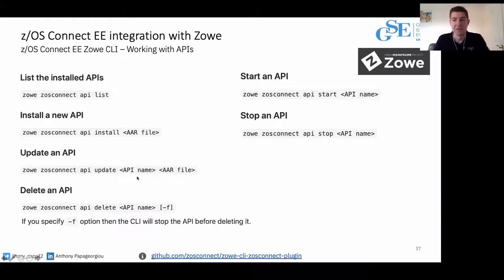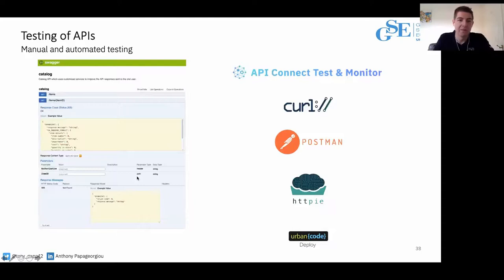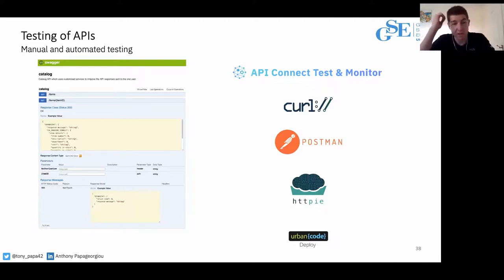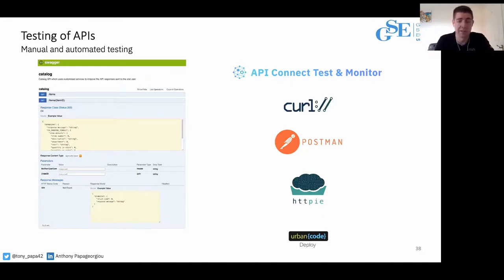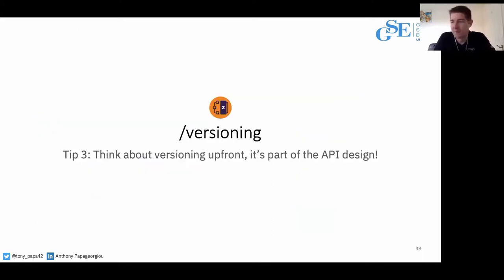For testing, you don't need any mainframe-specific tools on the front end — it's just a REST API. Anything that can automate REST API testing can absolutely be used with ZOS Connect. There was an interesting example where people used ZOS Connect solely to front-end their COBOL programs so they could test them using modern API-driven test tools — not using the APIs in production at all, just as part of their test framework.